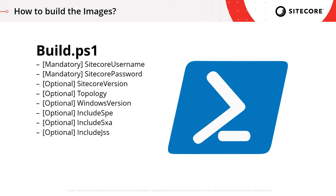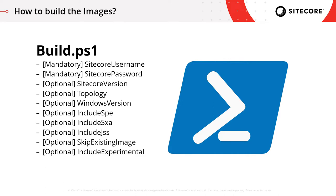The next few parameters are switch parameters, meaning you just need to include them when you execute the script — there is no value. Including these changes the functionality. You can select to include Sitecore PowerShell images, Sitecore Experience Accelerator images, and Sitecore JavaScript Services images. There's also an optional parameter to skip any images that already exist, and a parameter to include experimental images, such as those based on the publishing service. The final parameter is based on whether you want to push your images out to a private registry.